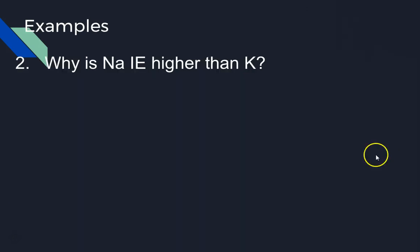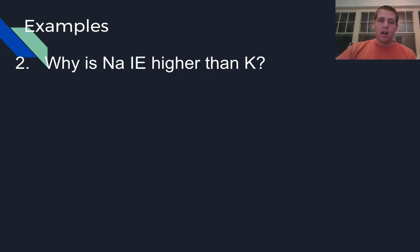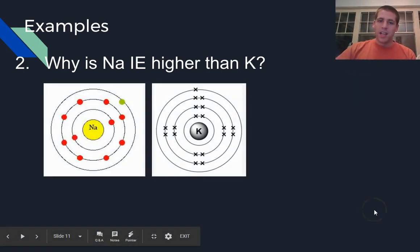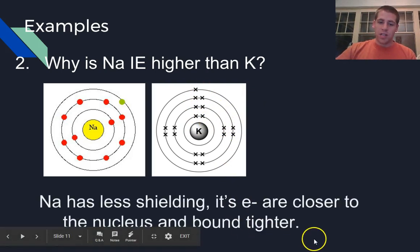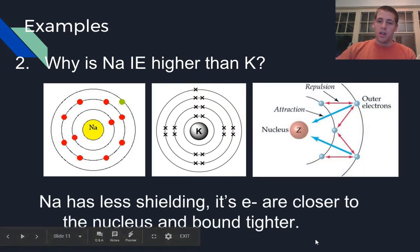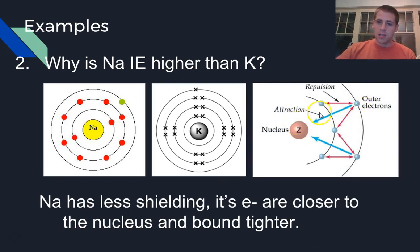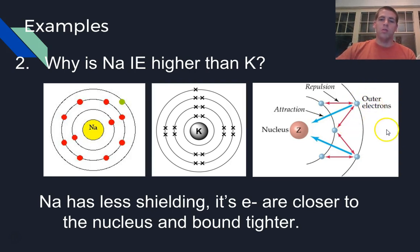Take a look at your periodic table. Why is sodium higher in ionization energy than potassium? Sodium has three energy levels; potassium has four, so there's more shielding going on. These outside electrons are attracted to the nucleus, but the more inner electrons you have — the more layers of electrons — the more electron-electron repulsion you have, which makes it easier to remove those outside electrons and therefore requires less energy.